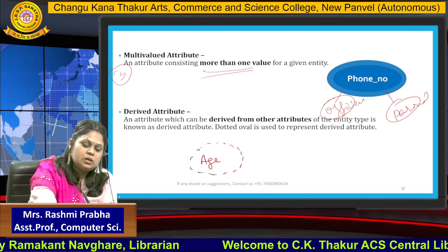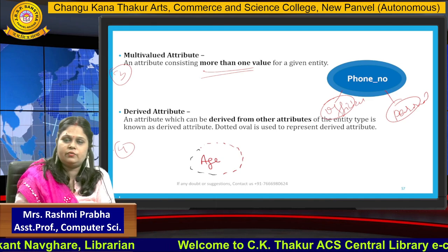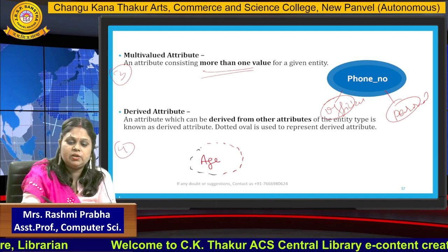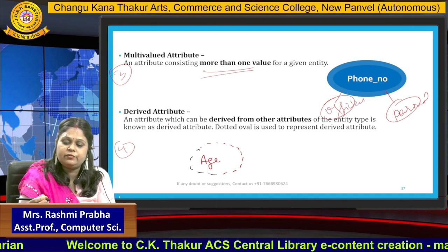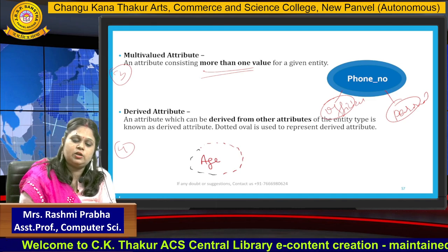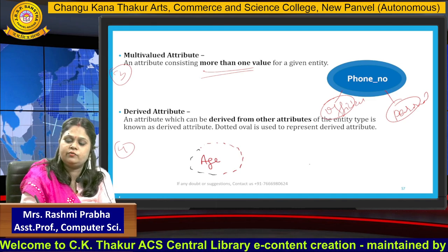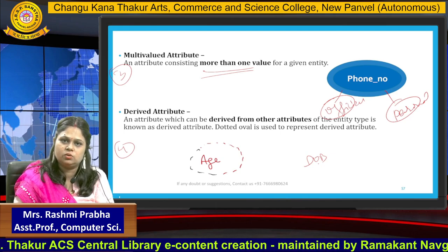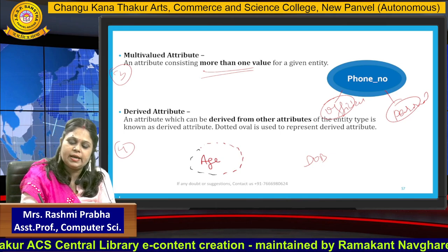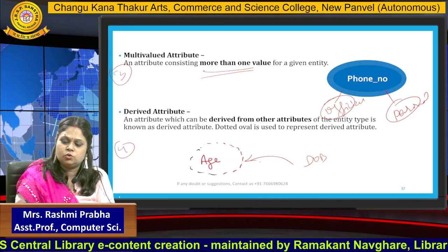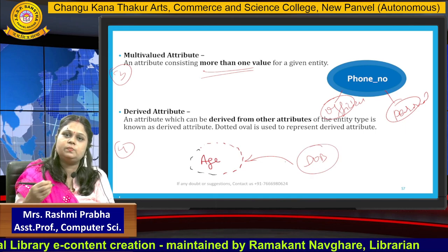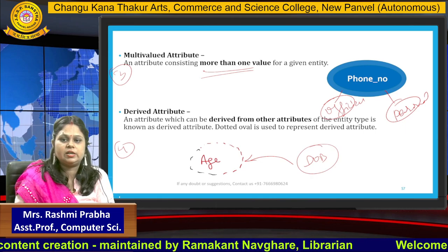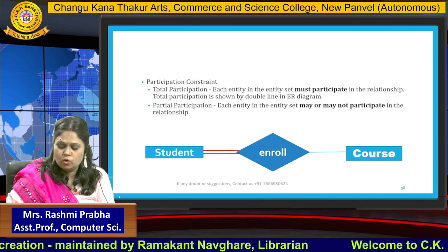The fourth category of attribute is derived. A derived attribute is one that can be derived from another attribute. For example, if I say my date of birth is such and such, you can calculate my age from it. By using the date of birth, you can simply calculate the age — and that makes it a derived attribute.